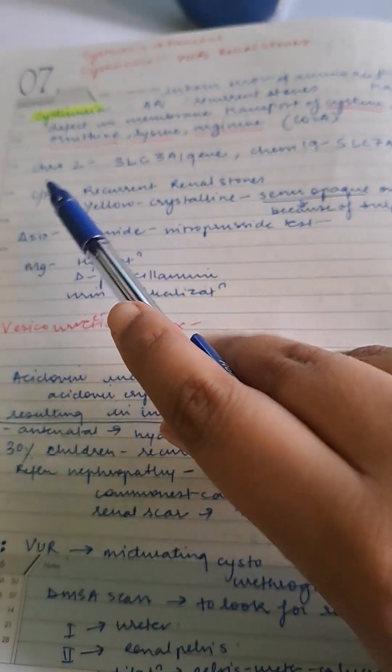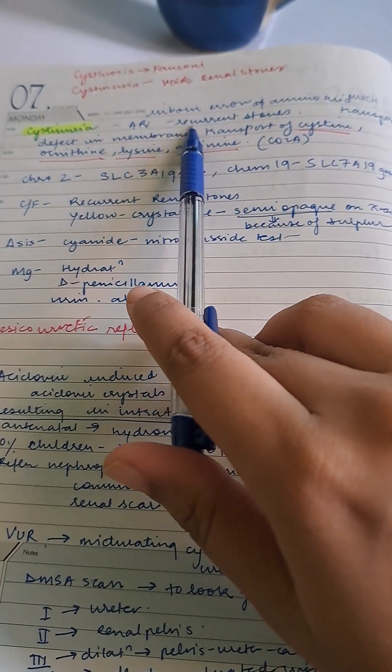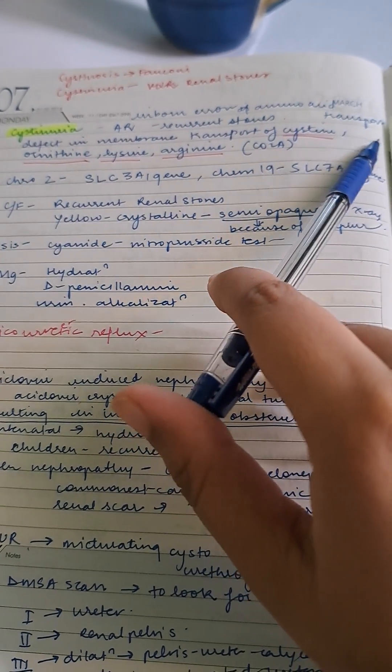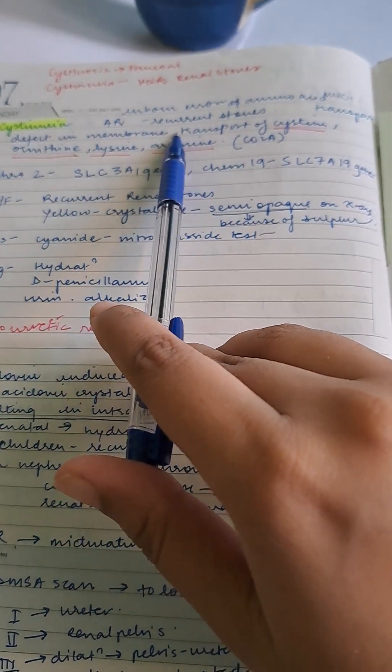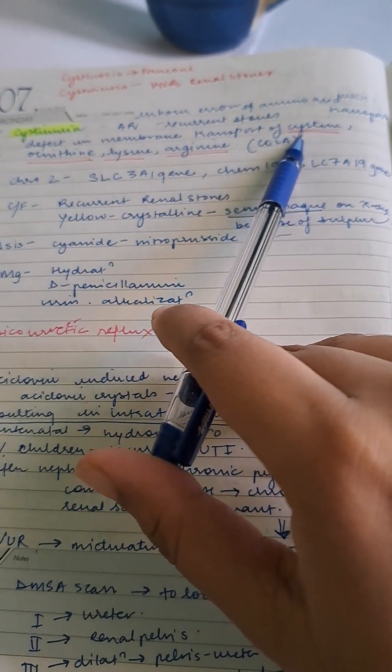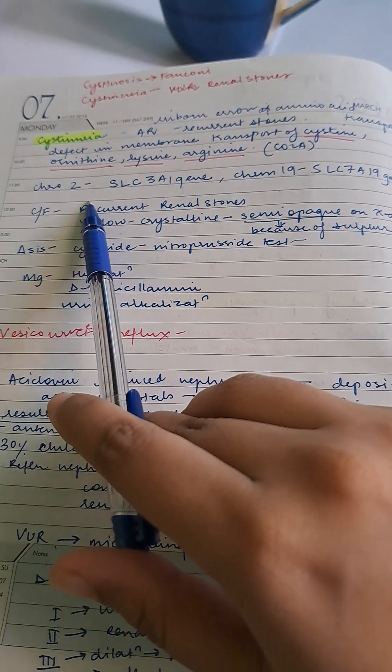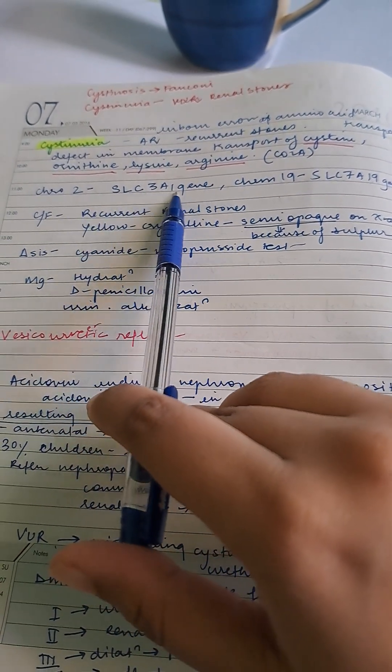Cystinuria is an autosomal recessive disorder, an inborn error of amino acid transport causing recurrent stones. There's a defect in membrane transport of cysteine, ornithine, lysine, and arginine. Genes involved are SLC3A1 on chromosome 2 and SLC7A9 on chromosome 19.